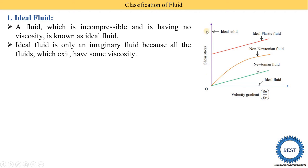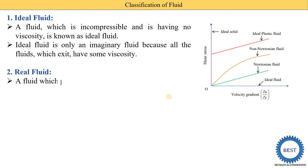For all the types of fluid we draw one diagram: shear stress versus velocity gradient. Velocity gradient is denoted as du/dy. Ideal fluid has zero shear stress — the value of shear stress is zero — but it has some velocity gradient. The vertical line on the y-axis is called the ideal solid, because solids have no velocity, so the velocity gradient for the ideal solid is zero but it has a certain value of shear stress.